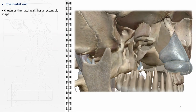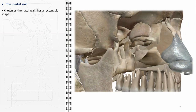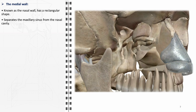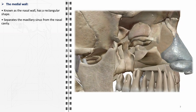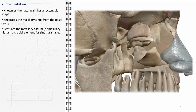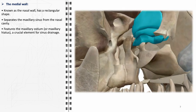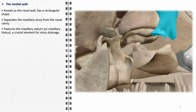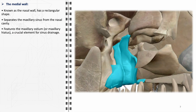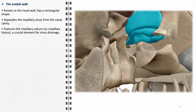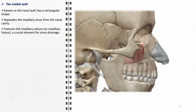The medial wall of the maxillary sinus, commonly referred to as the nasal wall, has a distinctive rectangular shape and is primarily made of cartilage. One of its primary roles is to separate the maxillary sinus from the nasal cavity, playing a significant role in the sinus's health and function. A key feature of the medial wall is the maxillary ostium, also known as the maxillary hiatus. This structure is pivotal for sinus drainage — it serves as a passage through which mucus and secretions drain into the nasal cavity. Blockages or obstructions of the ostium can lead to sinusitis and other complications.